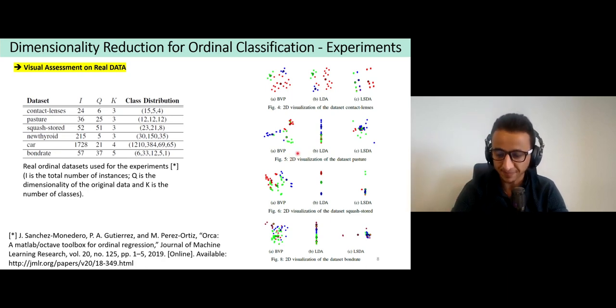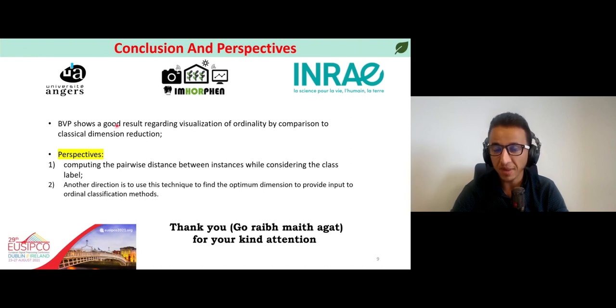To conclude, BVP shows good results regarding the visualization of ordinality by comparison to the classical dimension reduction techniques such as PCA, t-SNE, LDA and others. As perspectives, we aim to introduce the pairwise distance during the projection process while considering of course the class order as we do currently. We also aim to go for another direction by using this technique to find the optimum dimension to provide input to a classifier for a machine learning problem with ordinal data. Thank you for your kind attention and please don't hesitate to ask or send us questions. Thank you.